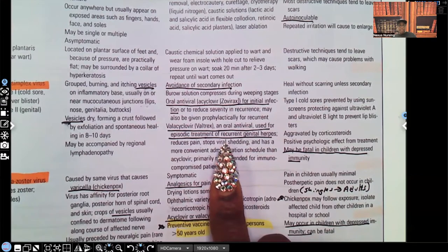So with valacyclovir, that's our Valtrex, that is used for recurrent—that means it's come back—recurrent genital herpes.